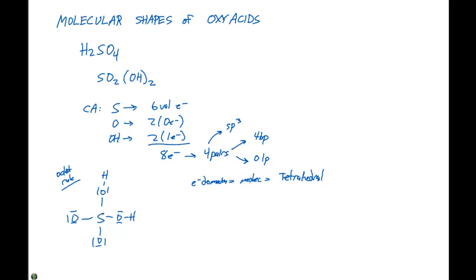Sulfur can also expand its octet, or we would have a double bond to oxygen, a single bond to oxygen, and our two hydroxide groups. Since the oxygen on the hydroxide group is tied up with that hydrogen bonding, it's not going to be able to expand its octet or form a double bond. So this limits how many double bonds we can put around this molecule.